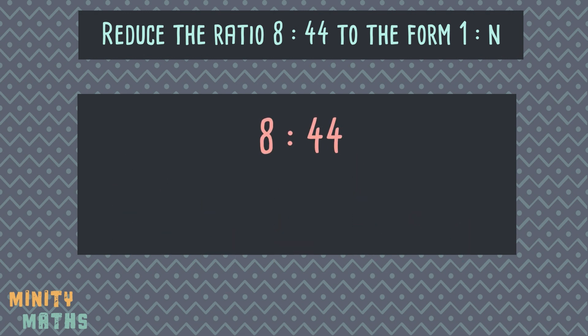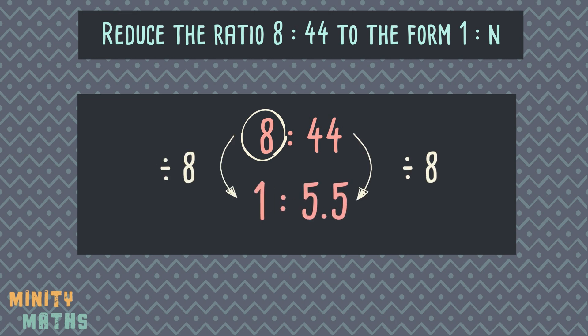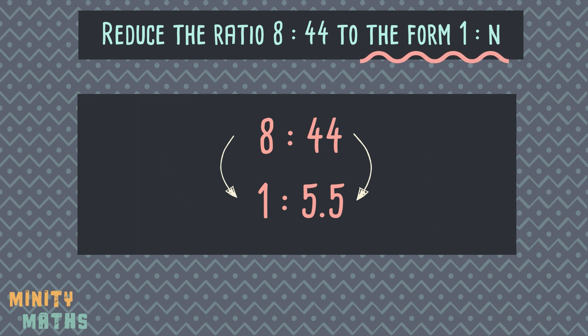We want to reduce the ratio 8 to 44 to the form 1 to n. To do this, we locate the number which needs to be written as 1, then divide all numbers in the ratio by this amount. In this case, 8 is the number we need to reduce to 1, as it is in the same position as the 1 in the question's ratio. So we divide 8 by 8, leaving us with 1, and then divide 44 by 8, leaving us with 5.5. So we have a ratio of 1 to 5.5. However, for exam questions, only simplify this way if you are specifically asked to do so.